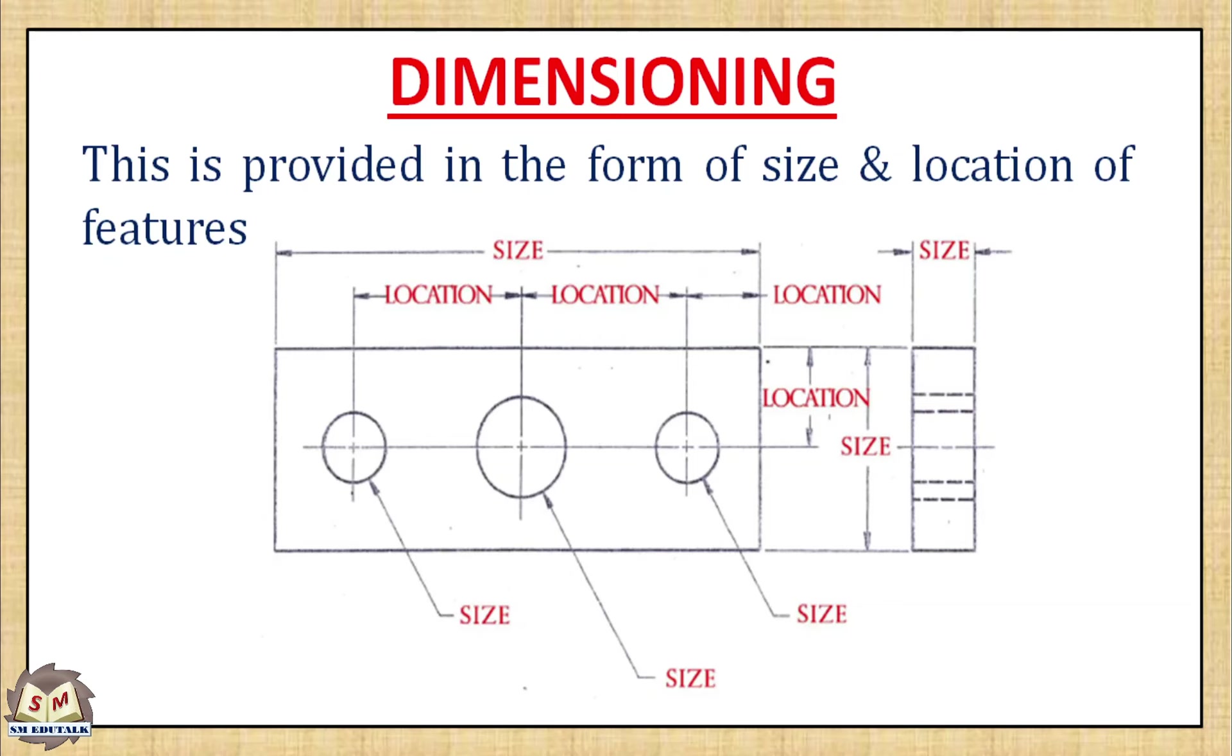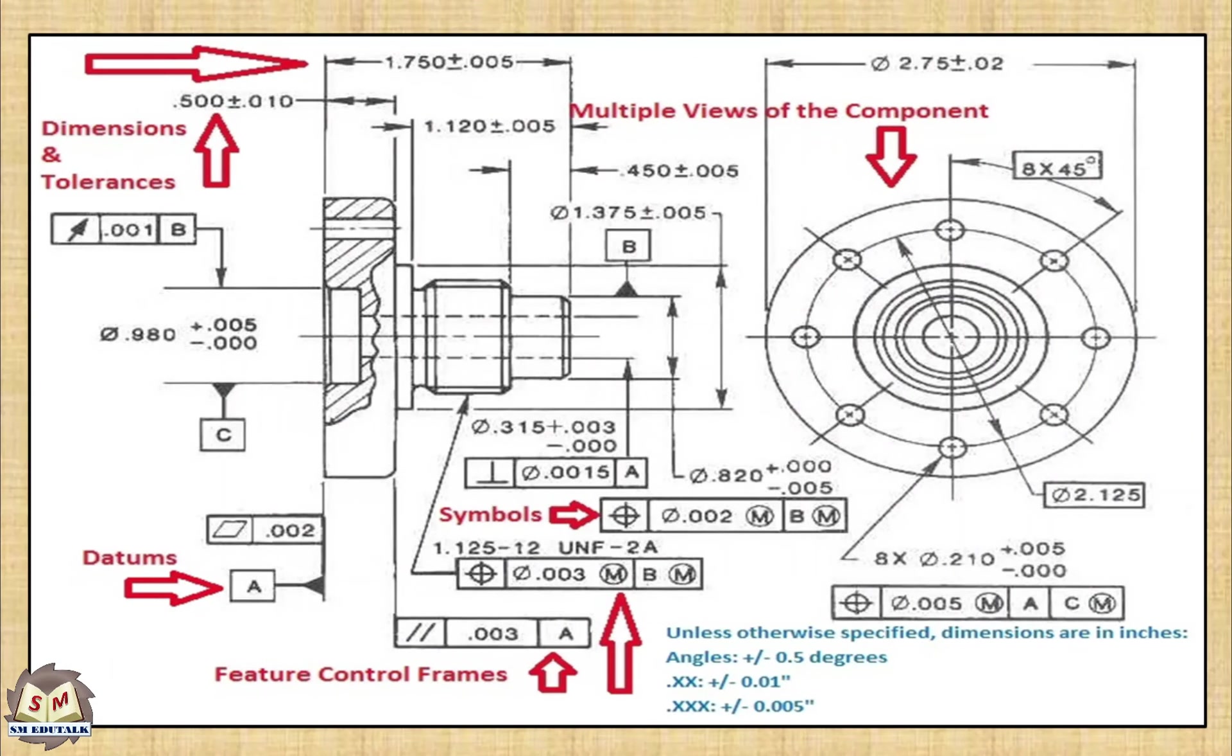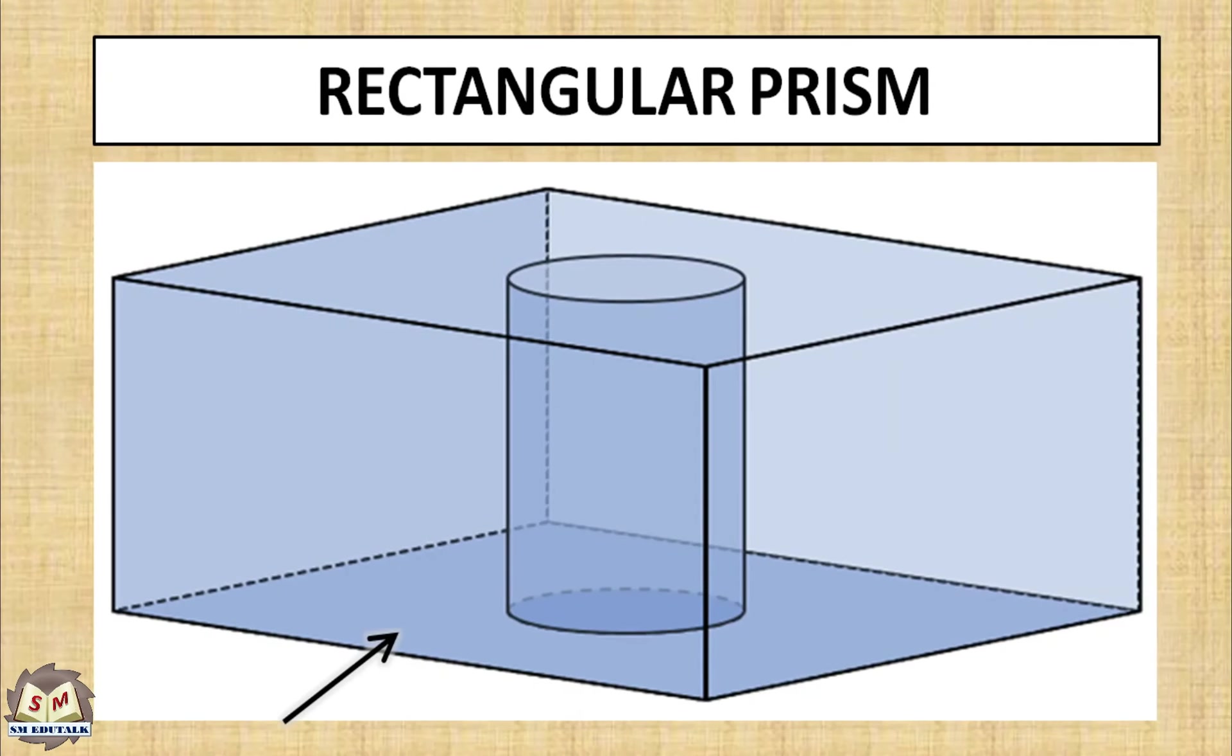Apart from this, other details like kind of finish, type of material, etc. are also needed in the case of production drawings. These features are illustrated on a drawing by the use of lines, symbols, figures and notes called dimensioning.